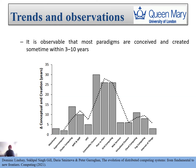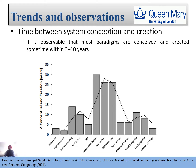This slide clearly shows the time between system conception — when the concept was invented — and creation — when the system was actually developed in real time. For various paradigms like mainframe, cluster computing, cloud computing, and fog computing, most paradigms are conceived and created within three to ten years.